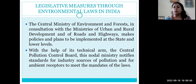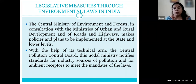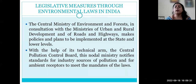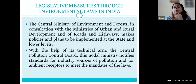As for legislative measures, the Central Ministry of Environment and Forest, in consultation with ministries of Urban and Rural Development and Roads and Highways, started making policies and plans for implementation at state, local, and regional levels. The Central Pollution Control Board was defined as the technical arm, responsible for providing all notifications, standards, and levels of pollution permissible for various industries and tolerable for sustaining living beings — human beings, plants, and animals.